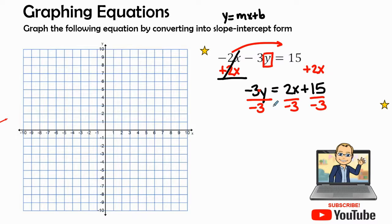So negative 3 divided by negative 3 gives me 1y equals, and then I have 2, a positive 2x. Positive and a negative is negative, negative 2 thirds x. And then a positive 15 divided by negative 3 is negative 5.